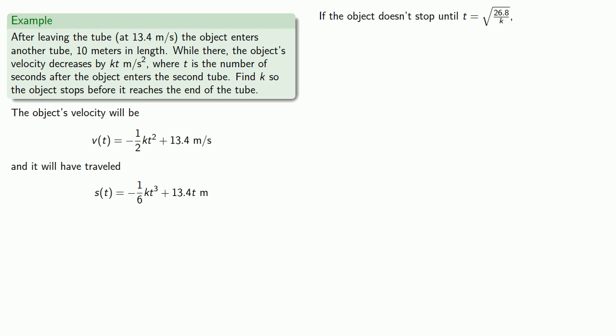If we want the object to stop before it splats against the far end of the tube, then we might reason as follows. If the object doesn't stop until t equals square root of 26.8 over k, and it only has 10 meters in which to stop, we need to find a value of k so that the distance of the object at this time is less than 10.